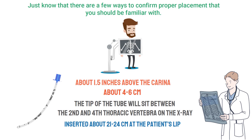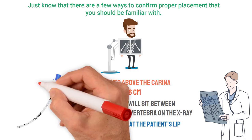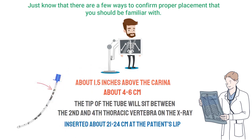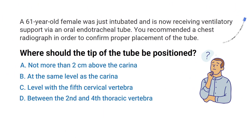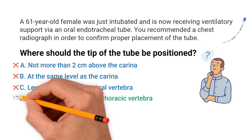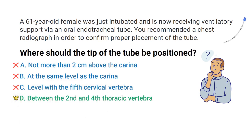Another quick reference: the tube should be inserted about 21 to 24 centimeters at the patient's lip, which you can verify by looking at the markings on the tube. By looking at the answer choices, we can quickly see that only one option shows the tube in the correct place, which means the correct answer has to be D — between the second and fourth thoracic vertebrae.